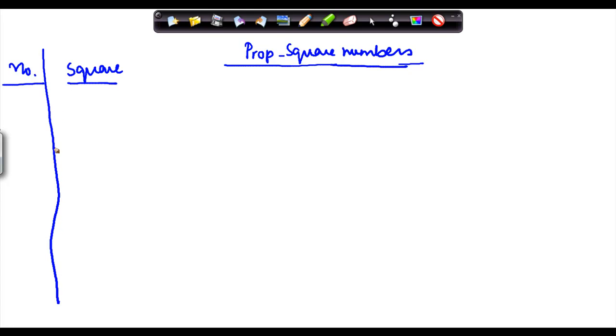Some properties of square numbers. So, the first property is P1, let me put this as P1.